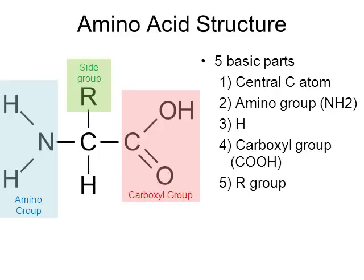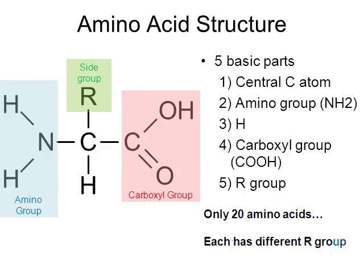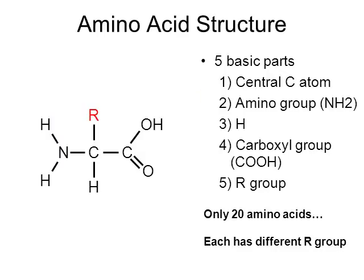The last atom attached to our central carbon is what we call the R group, or the side group. R doesn't really stand for anything on the periodic table — the joke is that it stands for 'the rest of the molecule.' Every one of the 20 different amino acids has a different R group. For example, the amino acid glycine has an R group that is simply a hydrogen atom — so the R group can be very simple.